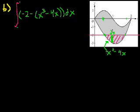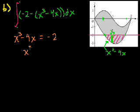What we could do is we can set them equal to each other. So we could say, at what x values does x to the third minus 4x equal minus 2? At what x values are the y values the same? So we just set them equal to each other. If we wanted to write this as a proper polynomial expression, we would get x to the third minus 4x plus 2 equals 0.